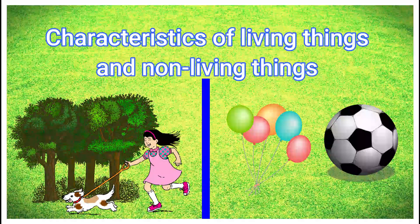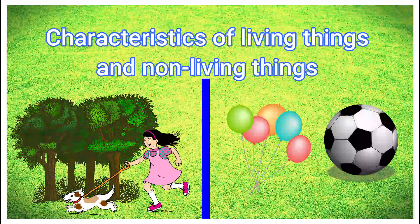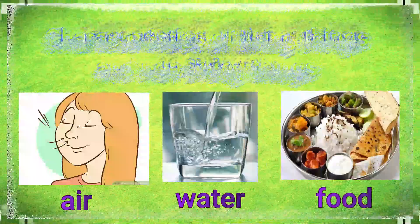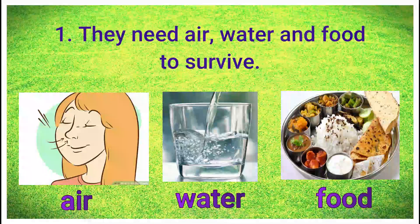Hello children, welcome to you all. In this video we are going to learn the characteristic features of living things and non-living things. As we know, living things have life — they possess some special characteristic features which are seen only in living things. Living things need air, water, and food to survive; without these they cannot live.